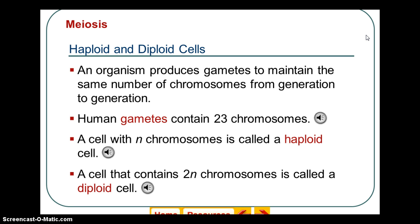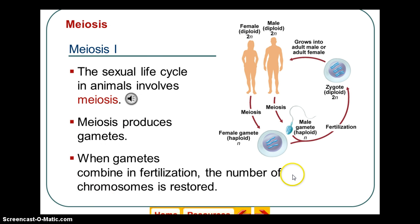The number of chromosomes is represented by the letter N. If you see N by itself, it's haploid. If you see 2N, it's diploid. If it said 3N, that would be triploid. N represents the number of chromosomes: N alone is haploid, 2N is diploid.